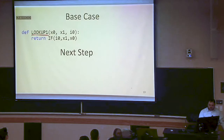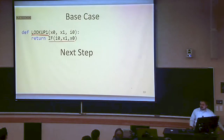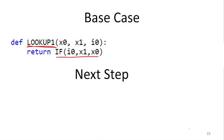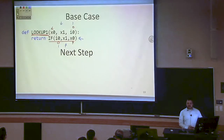So: how do we look up into a bit string of size 2, with an index of size 1? If we reorder our inputs, it's just an if — whenever i is 0 we want x sub 0, whenever i is 1 we want x sub 1. Whatever bit we looked up in lookup 1 is the same as the bit returned by if. So we know we can do lookup 1, and since we can do if with only NAND gates, we can do lookup 1 with only NAND gates.